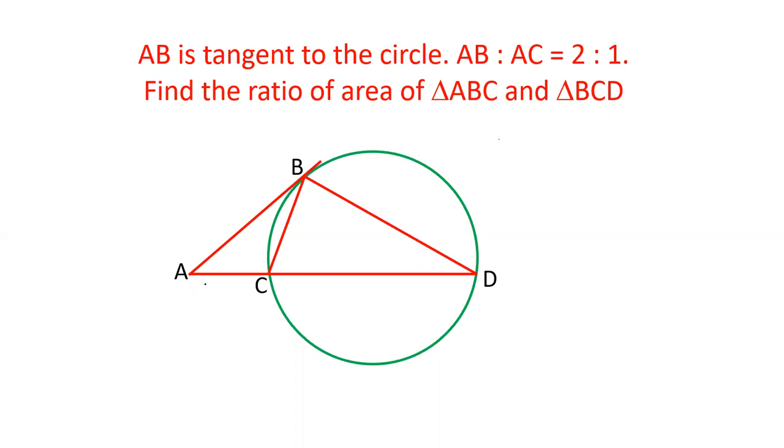The tangent is AB, the secant is ACD. The ratio of AB to AC is 2 to 1. We need to find the ratio of areas of triangle ABC and triangle BCD.